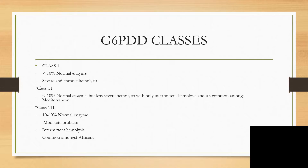In Class 2, though they also have less than 10% normal enzyme activity, they have less severe hemolysis with only intermittent hemolysis. This is very common among those in the Middle East or Mediterranean region. In Class 3, they have about 10 to 60% normal enzyme activity, with moderate problems and intermittent hemolysis. This is very common among Africans.